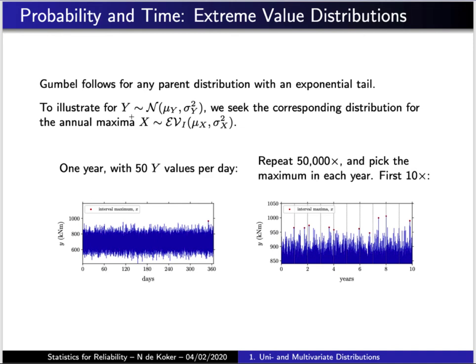Suppose the process produces 50 instances of Y every day — so in a year, 50 times 365 instances. This process was modeled through random sampling: 50 values every day for 365 days, each sampled from a normal distribution, and the single highest value in that year is selected. This experiment is then repeated 50,000 times — a numerical experiment that can be repeated as many times as practical on a computer, unlike a real process.